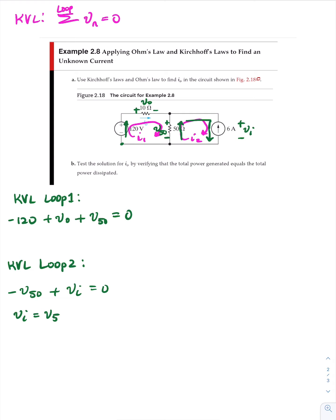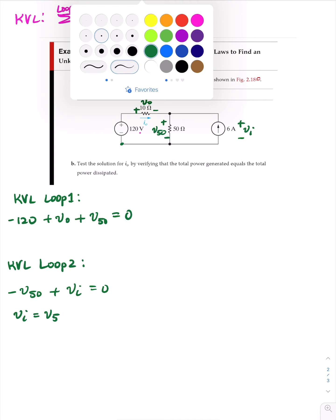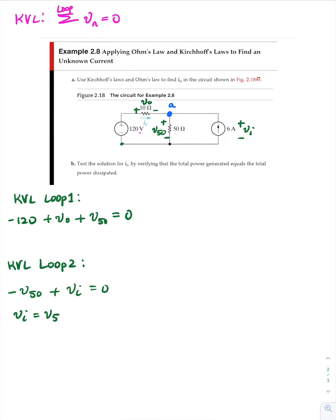Let's erase some of this. So we call this V sub 50. Now let's do KCL at this node A here. So I sub zero is entering the node, and we'll call this current going down here I sub 50. So KCL at node A, we have coming in I sub zero plus six, and leaving we have I sub 50.